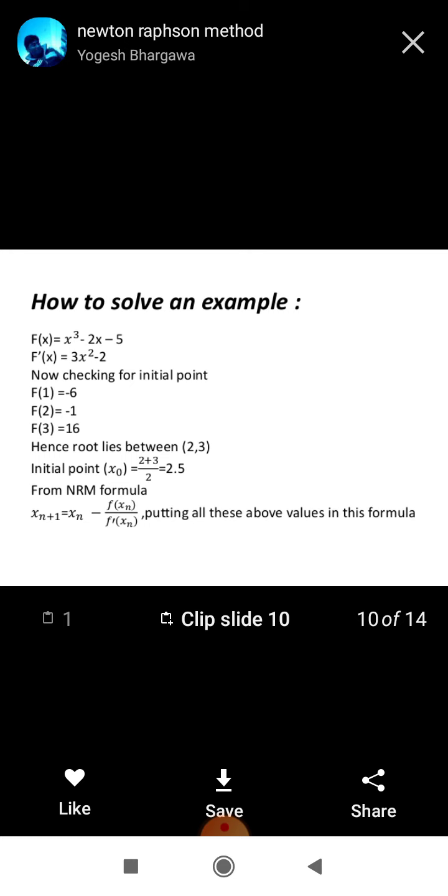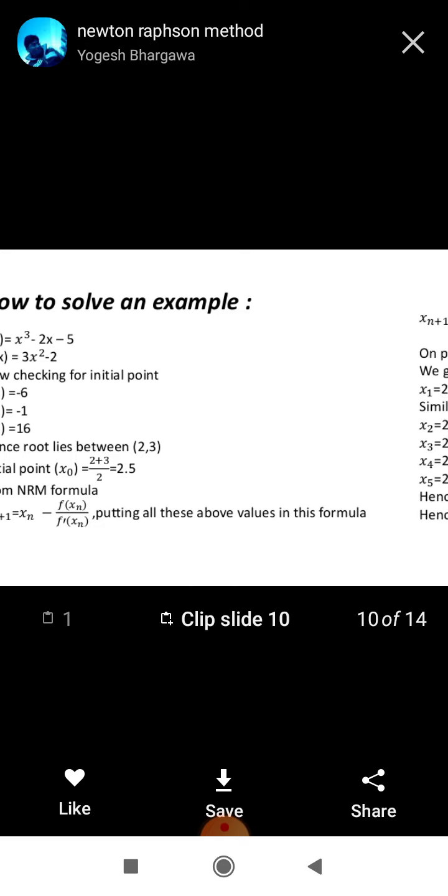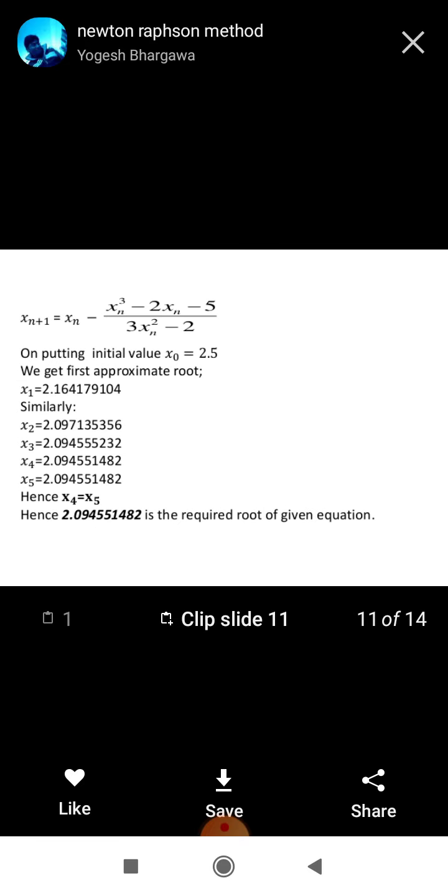So, by using the NRM formula, putting this value in this formula and we get the approximation given here. So, with more approximation, this process is continued until approximations are equalized.